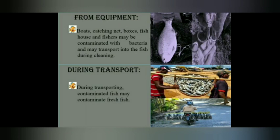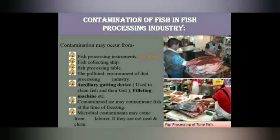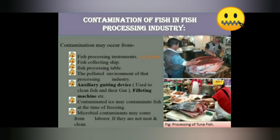Fish may also be contaminated by proximity to other already-contaminated fish. In fish processing industries, many factors affect contamination, including processing instruments like knives, fish collecting ships, processing tables, polluted environments, gutting devices, machines, contaminated ice, contaminated fish sources, and time of freezing. Microbial contaminants may proliferate if these are not kept neat and clean.